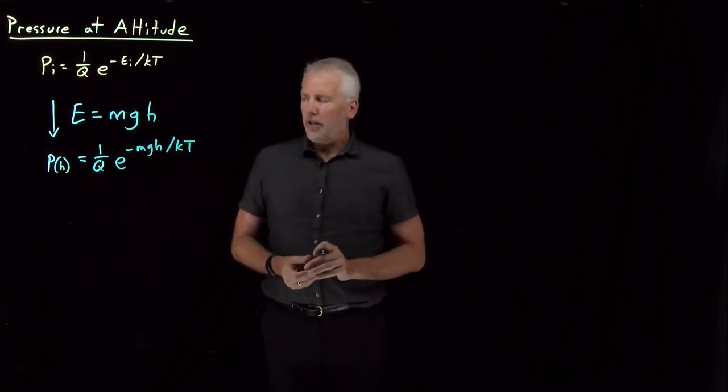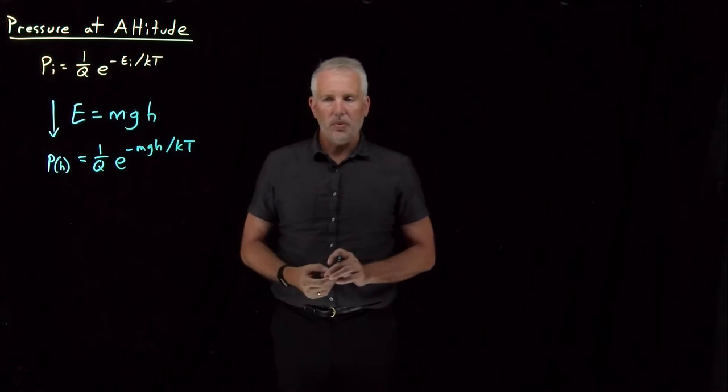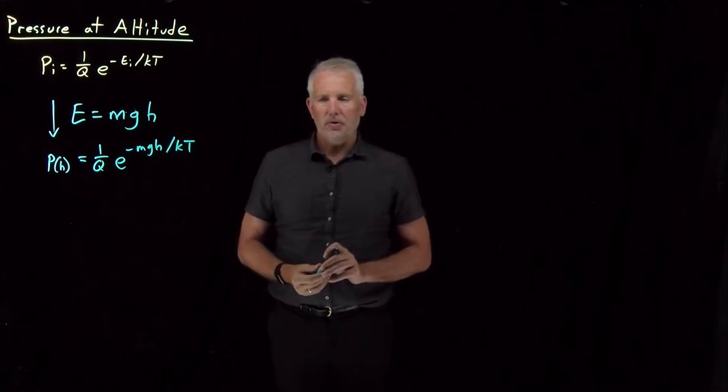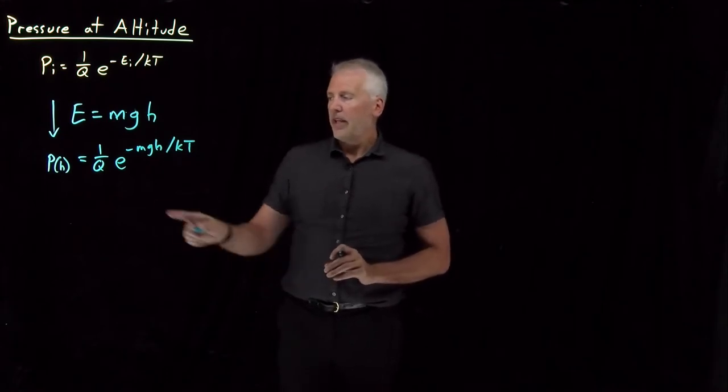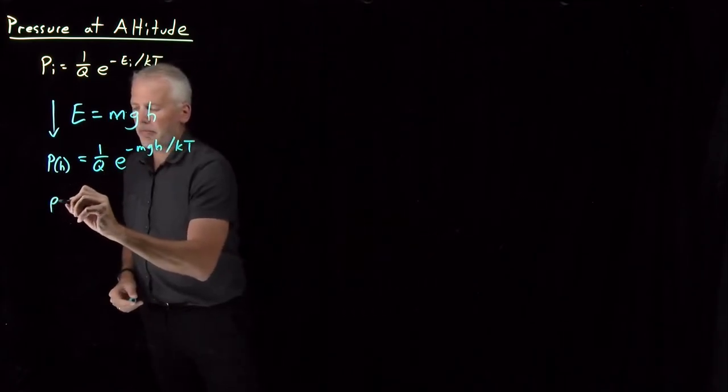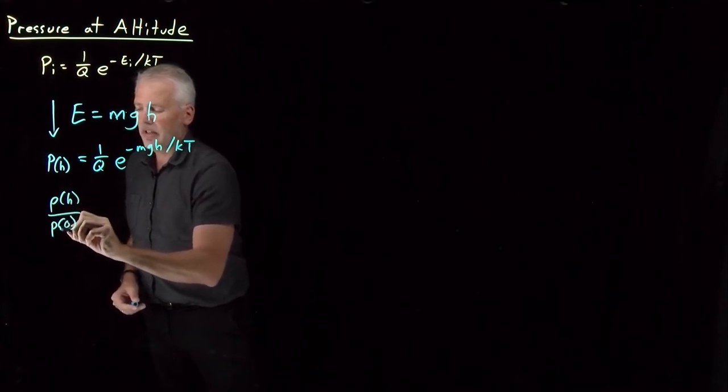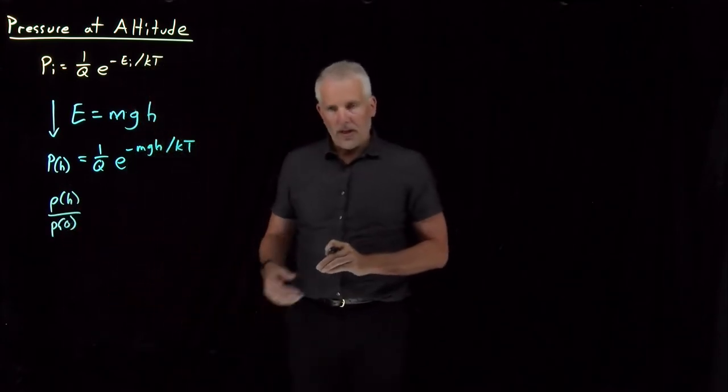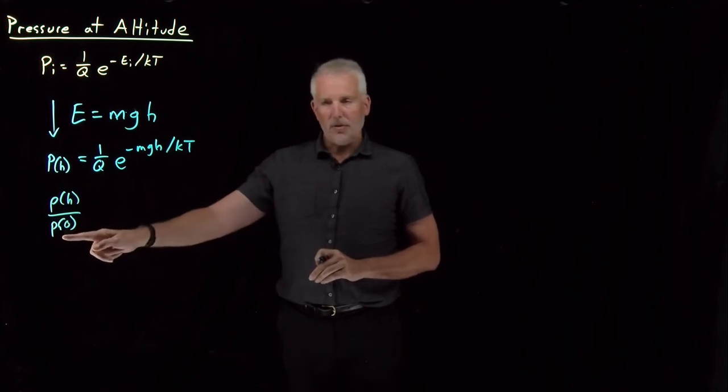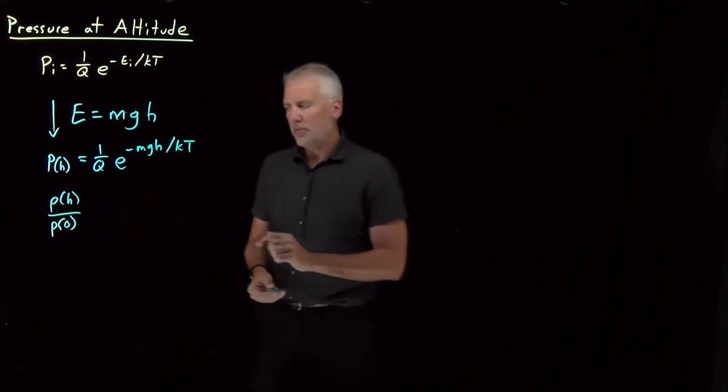That's useful enough. It's a little bit inconvenient because it's challenging to figure out the value of this constant q, but we can use the same trick that we've used before and say it's a lot easier if I ask for a relative probability. So the probability of being at height h relative to the probability of being at height zero, probability of being at sea level, whatever height zero means in this particular problem.